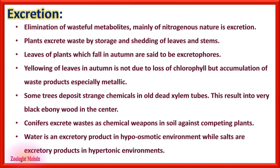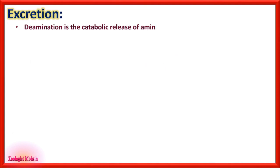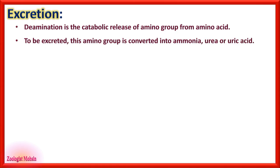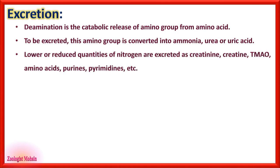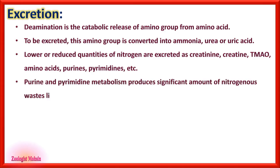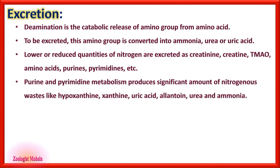Water is an excretory product in hypo-osmotic environments, while salts are excretory products in hypertonic environments. Deamination is the catabolic release of amino groups from amino acids; this amino group is converted into ammonia, urea, or uric acid. Lower quantities of nitrogen are excreted as creatinine, creatine, TMAO, amino acids, purines, and pyrimidines. Purine and pyrimidine nitrogenous base metabolism produces hypoxanthine, xanthine, uric acid, allantoin, urea, and ammonia.